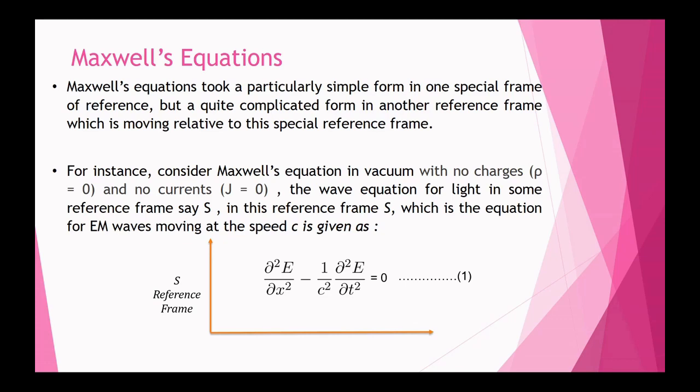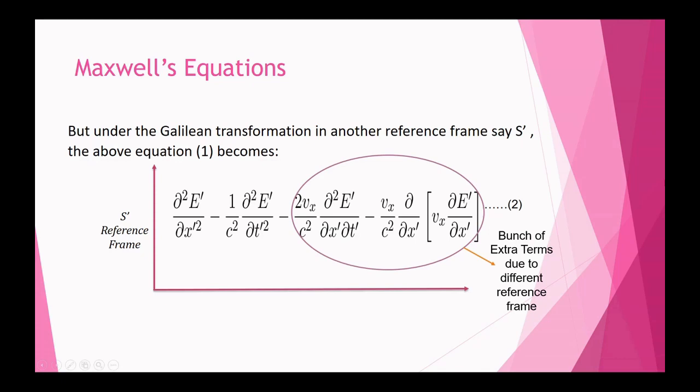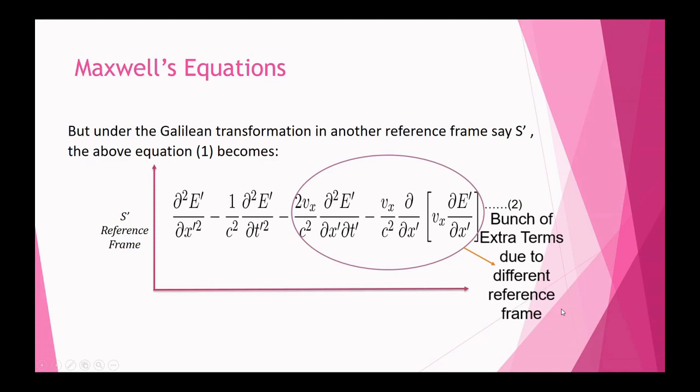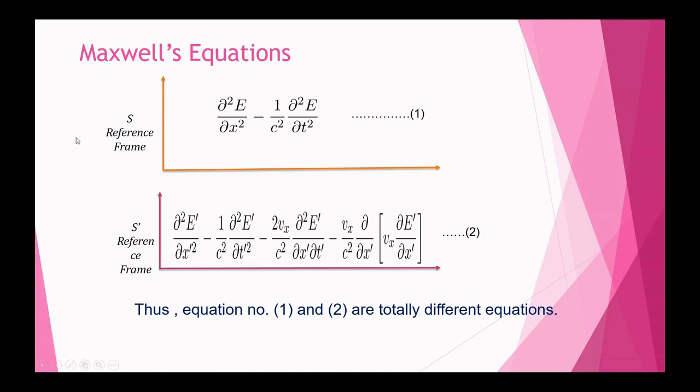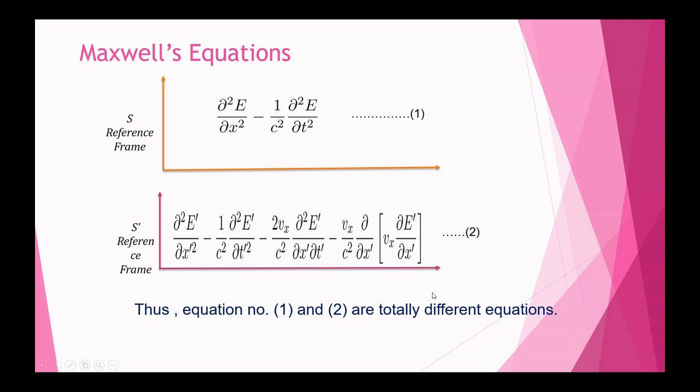We now attempt to transform Equation 1 from reference frame S to S-dash using Galilean transformation — just as we transformed F = ma to get F' = F in Newtonian mechanics. When we apply the Galilean transformation to Maxwell's wave equation, we get extra terms. The resulting equation in S-dash — Equation 2 — is completely different from Equation 1. Therefore, Maxwell's equations do not transform simply like a Galilean transformation.